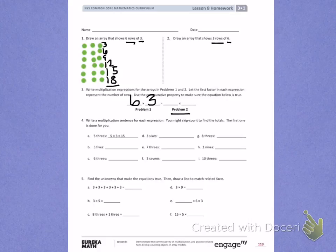I see letter A has 5 threes. 5 threes is also 5 times 3. Counting by fives, 3 times: 5, 10, 15. So 5 times 3 equals 15.